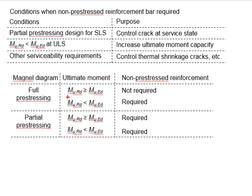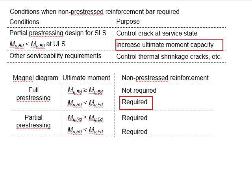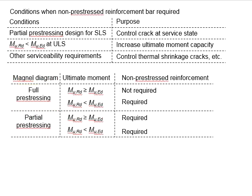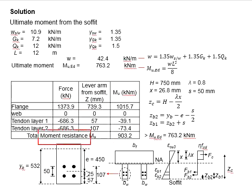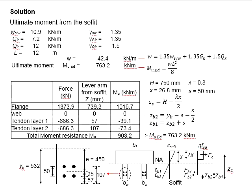However, if you find that the moment resistance is less than the moment load, you will need the non-prestressed reinforcement bar in order to increase the moment capacity of the section. On the other hand, if you design based on partial prestressing, regardless of whether the resistance is bigger or smaller than the moment load, the non-prestressed reinforcement bar will be required. This is why, even though the moment resistance in example number 6 is found greater than the moment load, you still need the non-prestressed reinforcement bar.